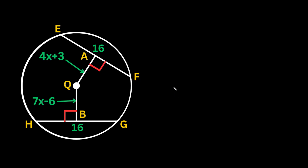What's up, you freaking geniuses? In this video I'm going to teach you how to use chords to find the radius of a circle. I'm going to go over two examples, starting with the first one. First, I just want to quickly remind you what a chord is. A chord is a straight line whose endpoints touch the edge of the circle.